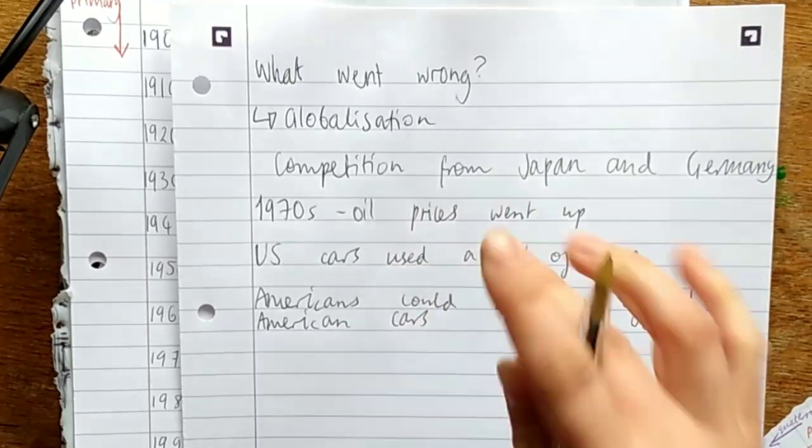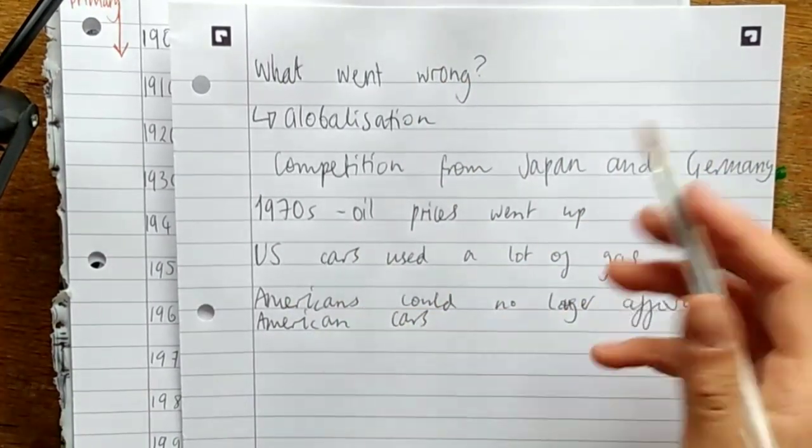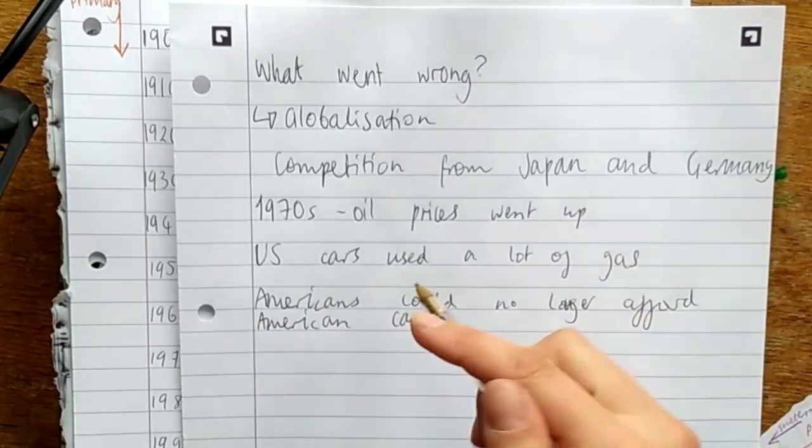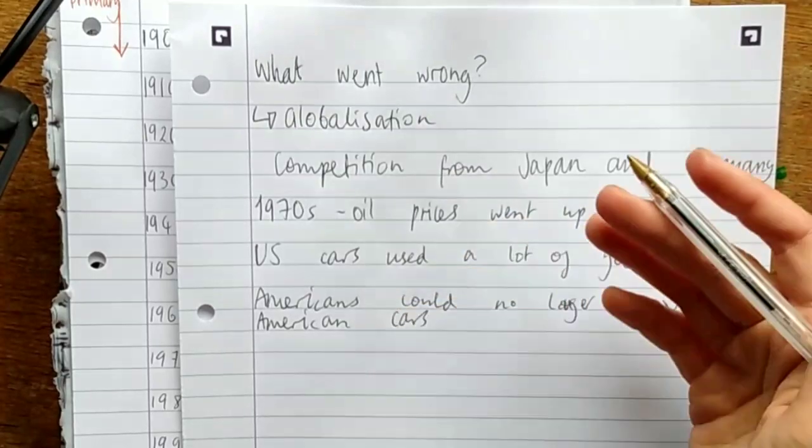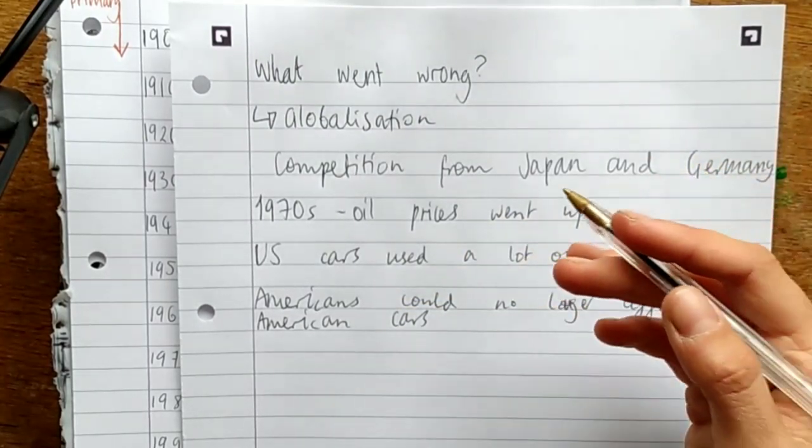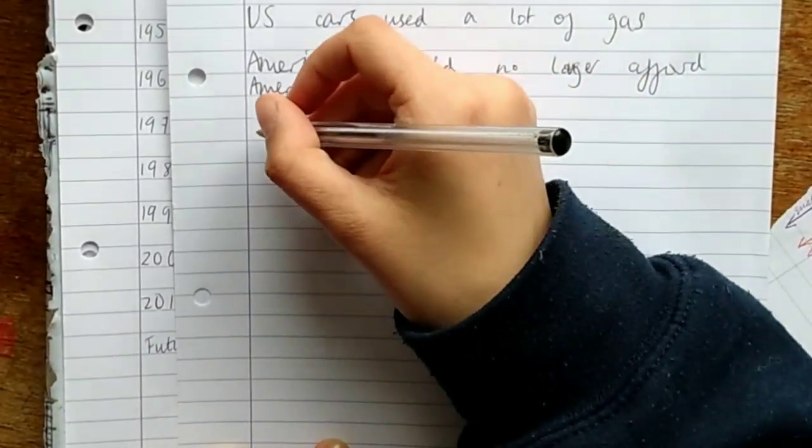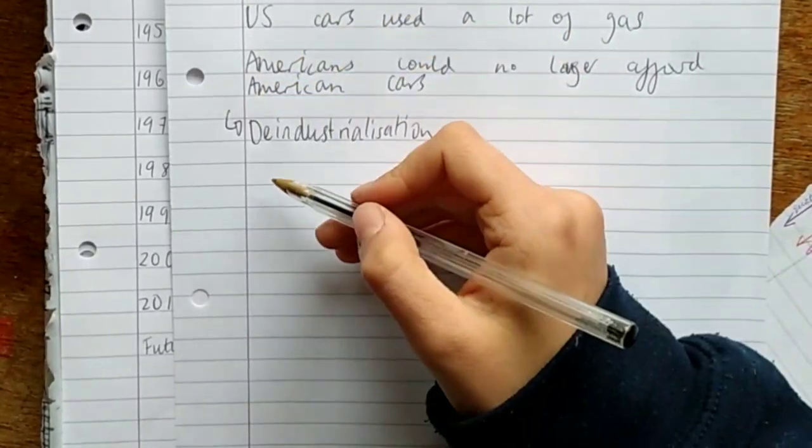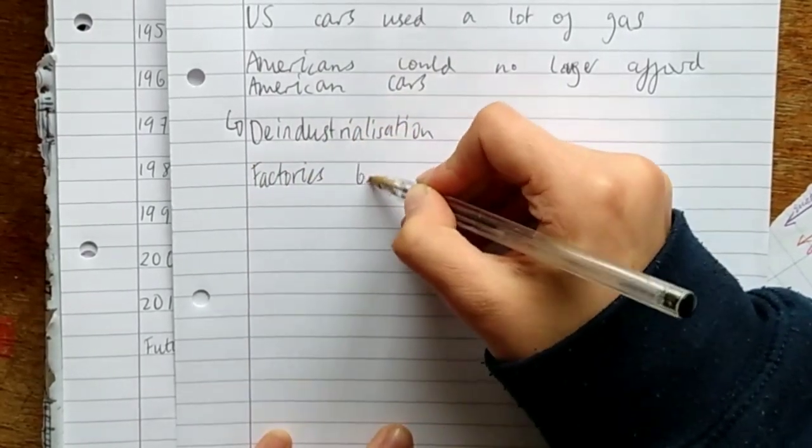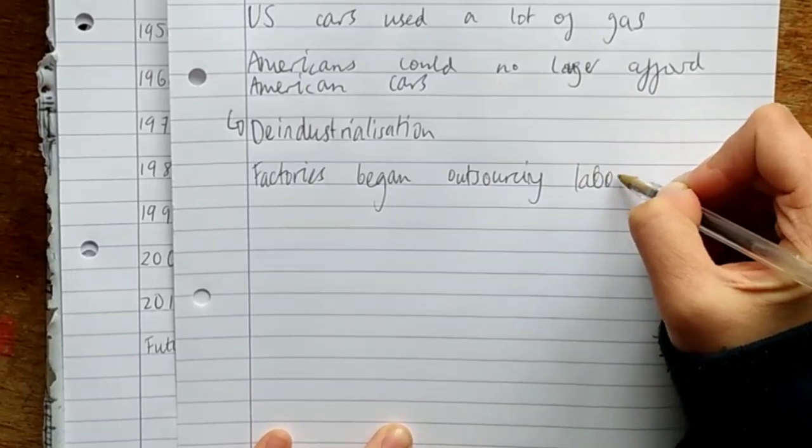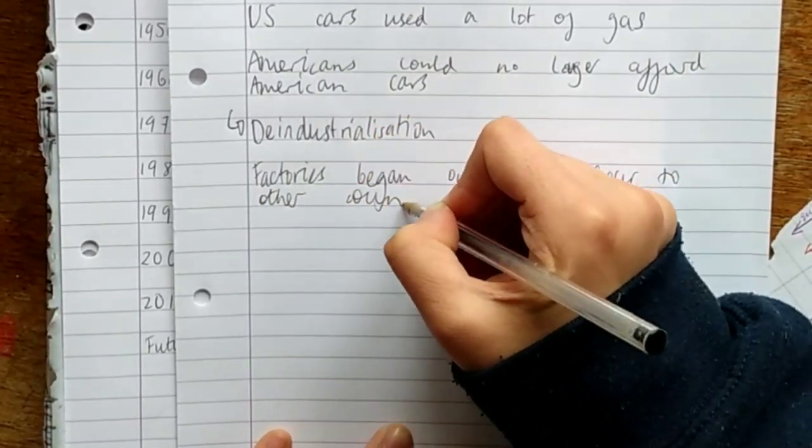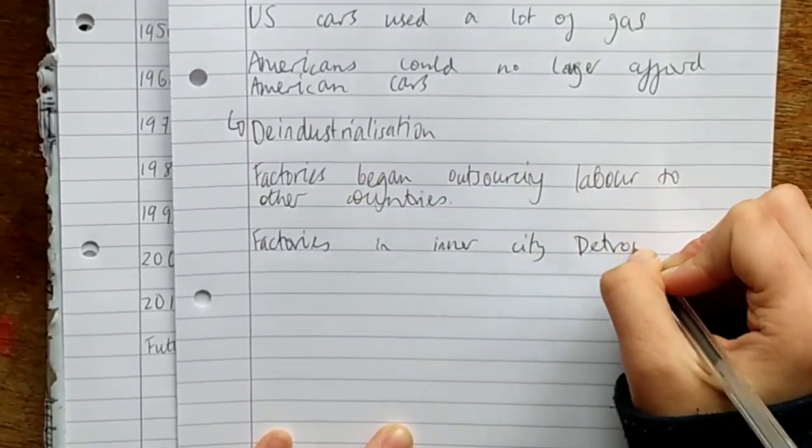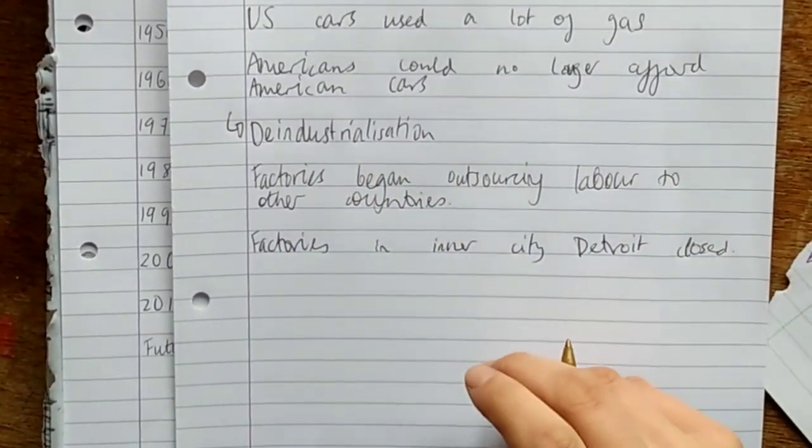Up until that point, the American car industry always had an internal market. Even if they weren't making many sales abroad, they were still selling a lot of cars in the country and there was no money going out to other automobile companies abroad. But then Americans were buying Japanese and German cars. Factories closed down and this led to de-industrialisation. The big three car manufacturers in Detroit began losing money and began outsourcing their labour to countries where they could pay workers less money because US workers required quite high wages. Factories in Detroit in the inner city area closed down.